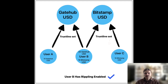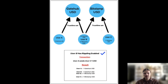Here's an example of rippling in action. In this case, we have three XRP ledger users and two issuers of USD stablecoin, Gatehub and Bitstamp. User B has rippling enabled. The transaction we will demonstrate is user A sending user C one USD. Initially, user A has a balance of 10 Gatehub USD, and user B has a balance of 20 Gatehub USD and 10 Bitstamp USD. When user A submits the transaction to send user C one USD, the result is the following: user A's balance decreases by one Gatehub USD, user B's balance increases by one Bitstamp USD and decreases by one Gatehub USD because it has rippling enabled, and user C's balance increases by one Bitstamp USD.